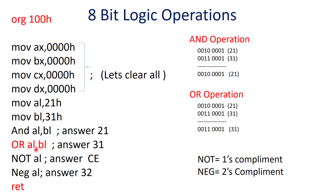In the next instruction, you are going to do the OR operation between 21 and 31, because the new value in AL is 21. The OR operation is nothing but an addition kind of thing — 1 OR 1 is 1, 0 OR 1 is 1, and 1 OR 1 is 1. So you are going to get 31 as your answer, and this 31 will be stored in the AL register.